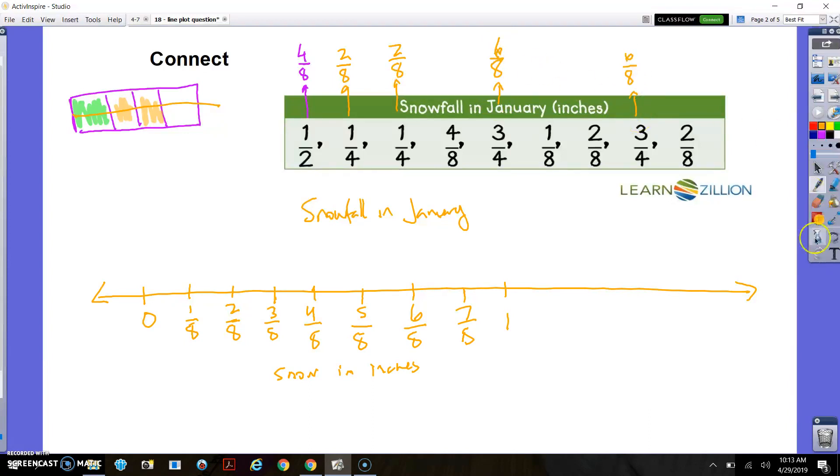So now I can put those on the graph. And say, okay, I got a four-eighths, a two-eighths, a two-eighths, a four-eighths, a three-fourths, which is six-eighths, sorry. One-eighths, two-eighths, six-eighths again, and two-eighths again. All right. So now I've got my line plot. So let's talk about a common question you might be asked. I'm going to transform this now into I do.